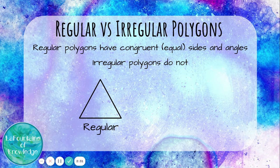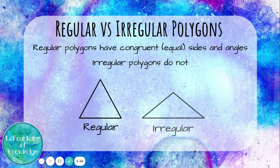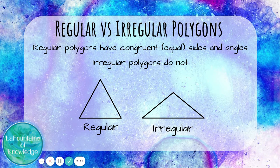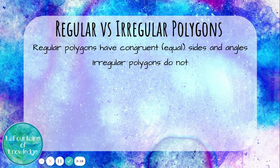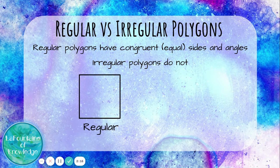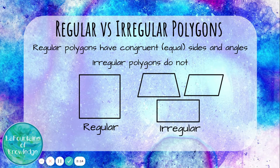Here we have a regular triangle. It has congruent sides and congruent angles. This is an irregular triangle — the sides and angles are not congruent; they are not equal. Here's a regular quadrilateral and some irregular quadrilaterals.